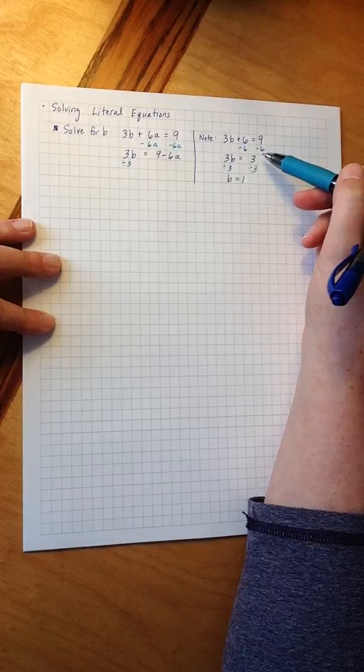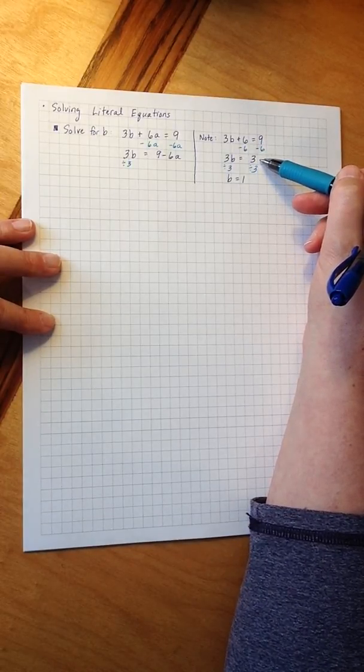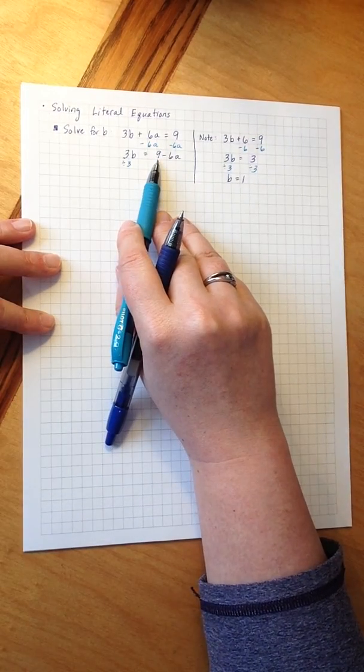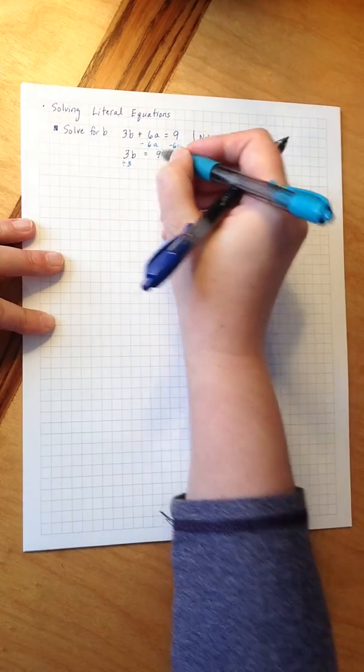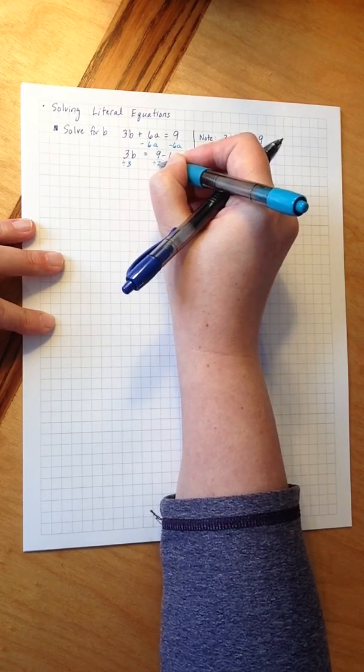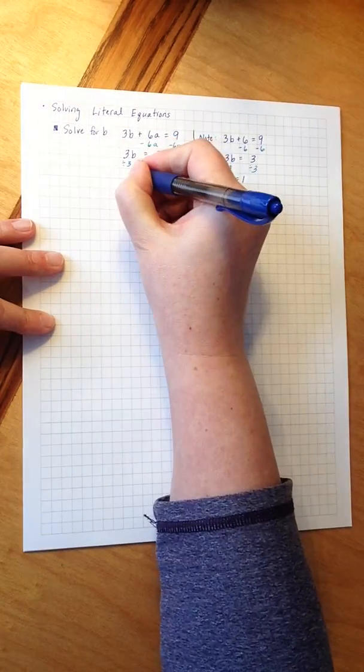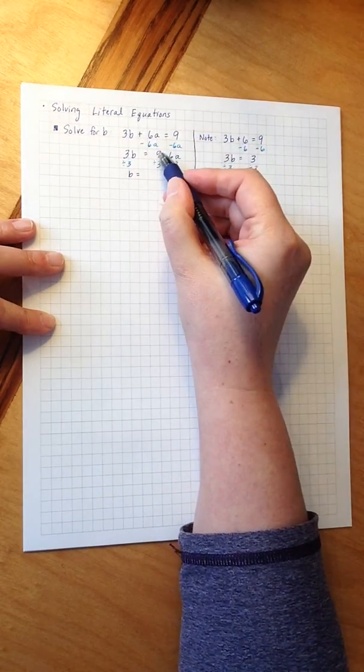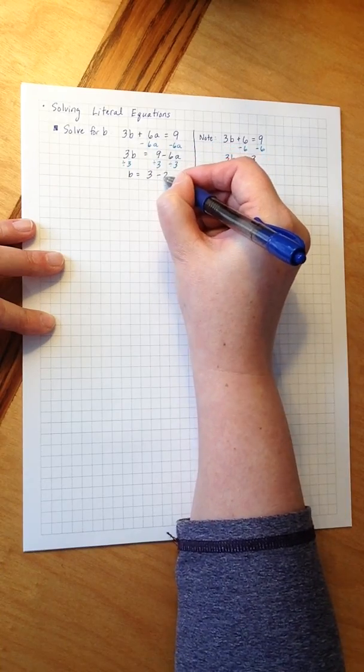In our related equation, however, we only had one term on the right hand side. In the equation we're trying to solve, I have 2, the 9 and the minus 6a. So I actually have to divide both of those terms by 3. This gets me b equals 9 divided by 3 and negative 6a divided by 3.